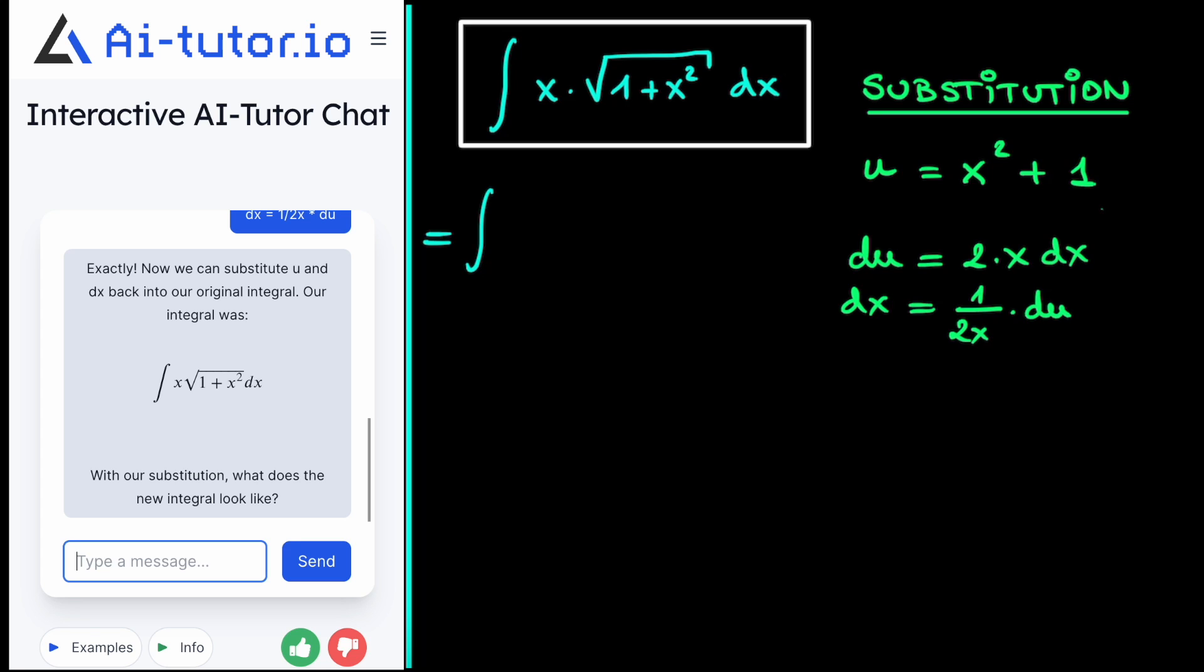So we get that our original integral is equal to x multiplied by the square root of 1 plus x squared. But we chose 1 plus x squared to be our substitution variable u. So we get the square root of u. Then we multiply by dx, but dx is equal to 1 over 2x du. And now we see, of course, that this x and this x in the denominator cancel out.